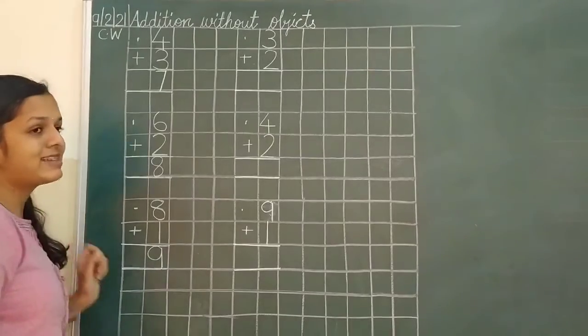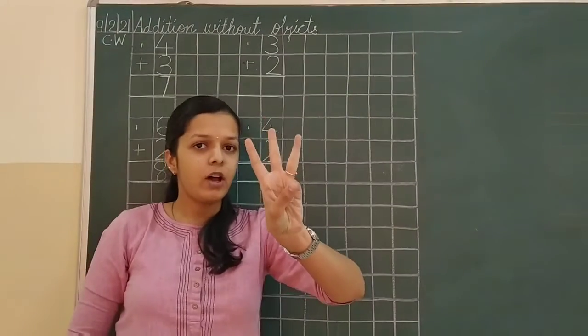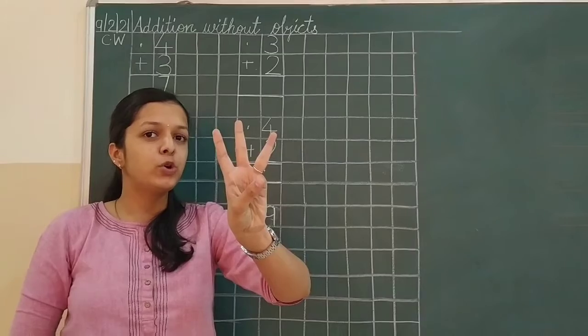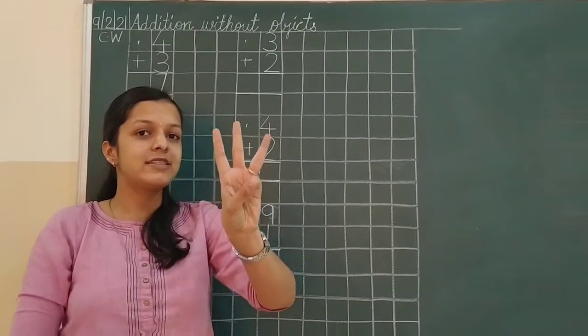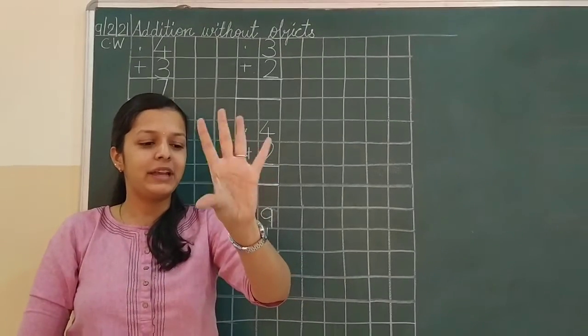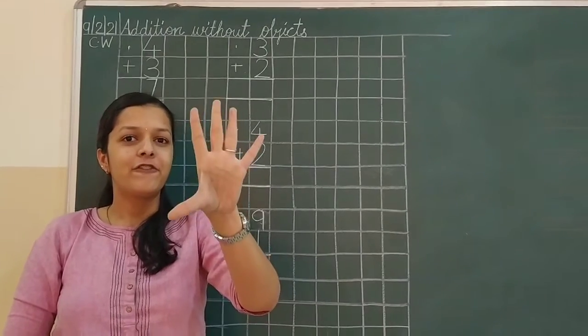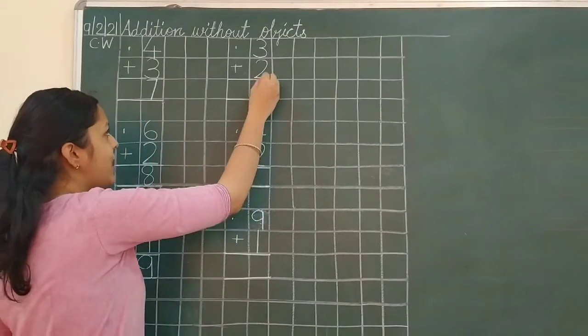Next, 3 plus 2. 3 on my finger. And when I add 2 numbers on this. 1, 2. 1, 2. How many? 1, 2, 3, 4, 5. 5. Answer is 5.